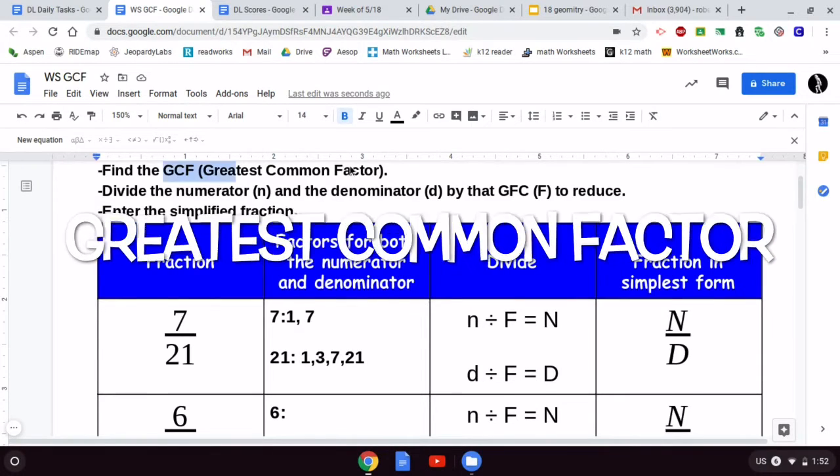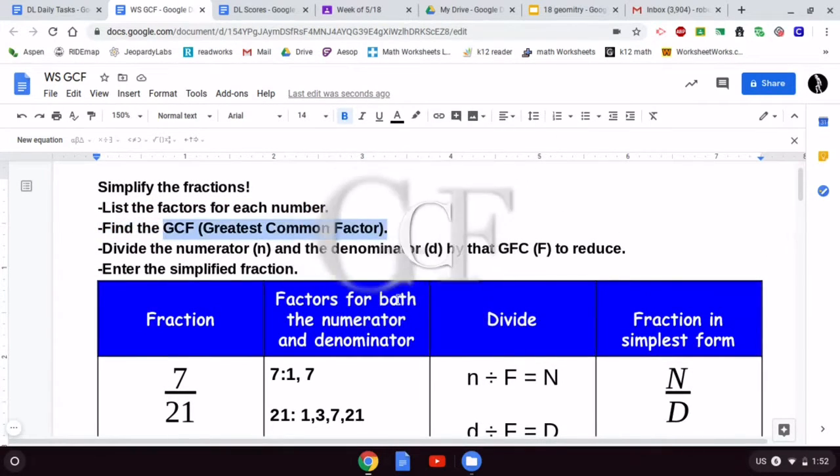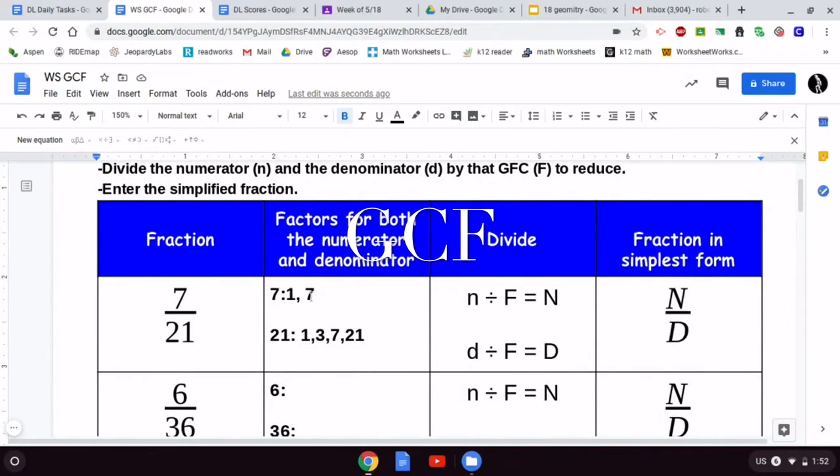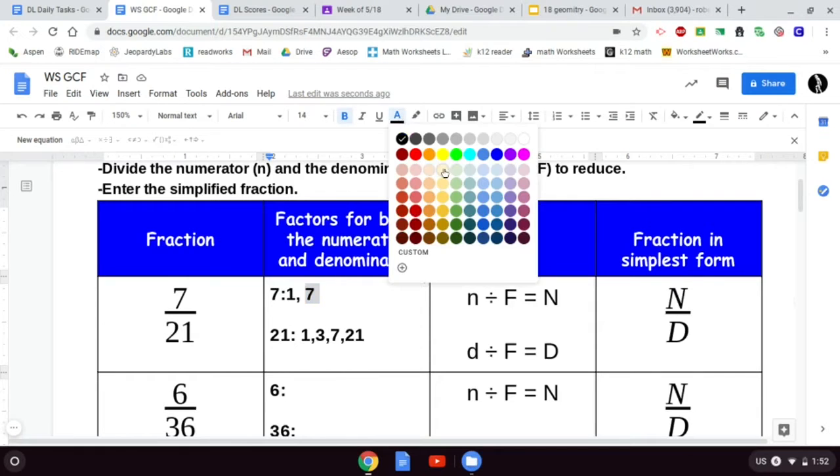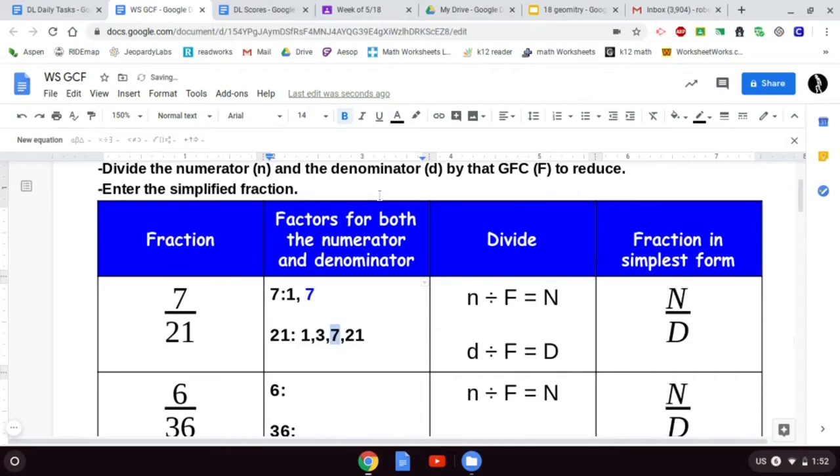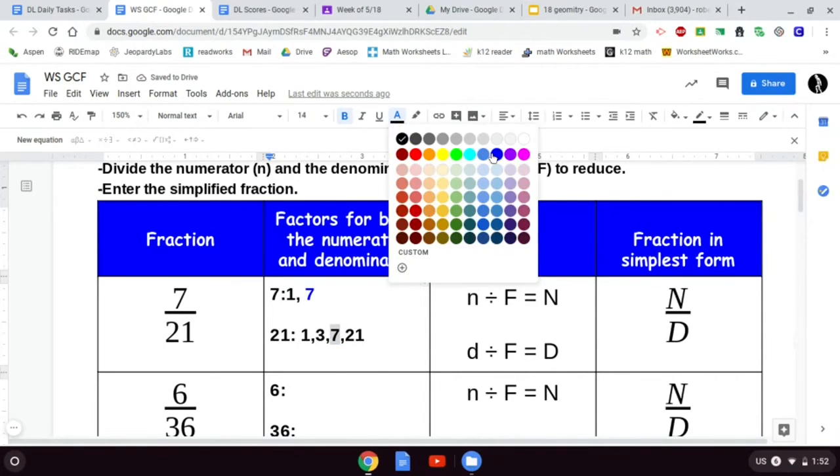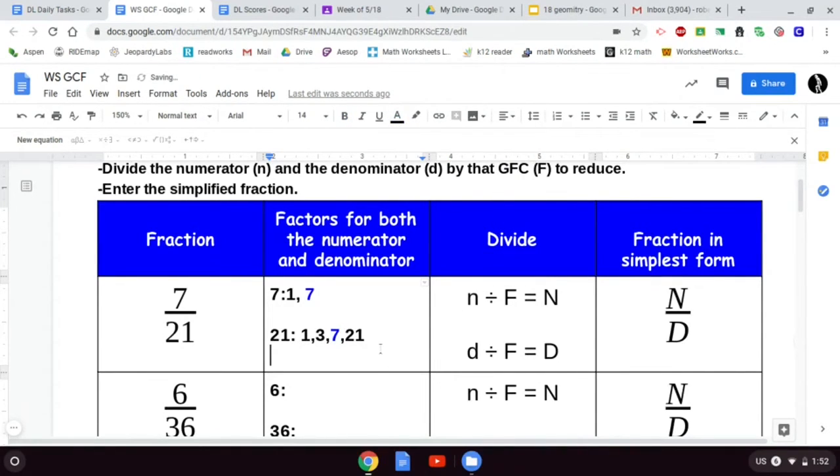Now what is the greatest common factor, the GCF, between 7 and 21? You're gonna look at which number is the highest number that they both have in common. That number is 7. I would like you to change the color of this number to something so that we know - when I say we, so that I know - that you mean to say that that is the greatest common factor.